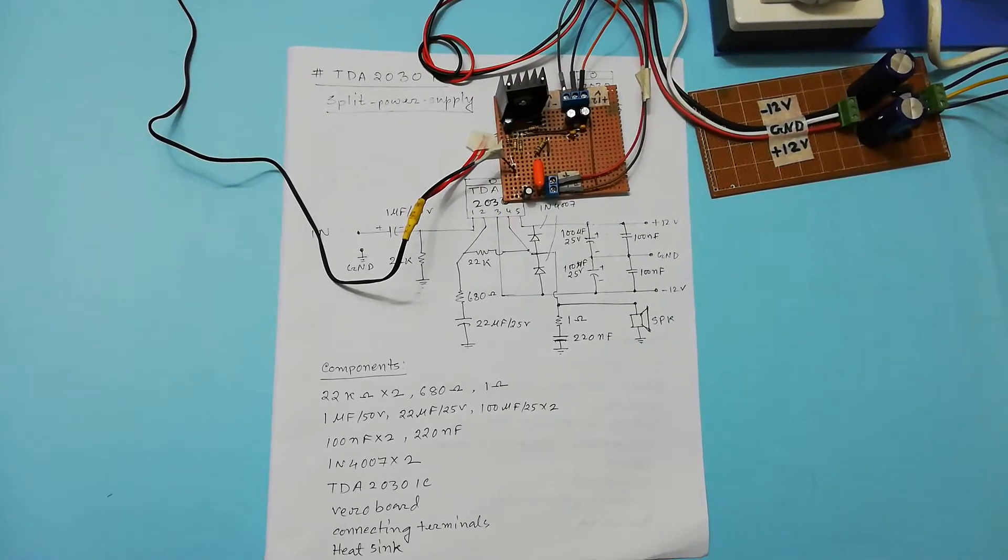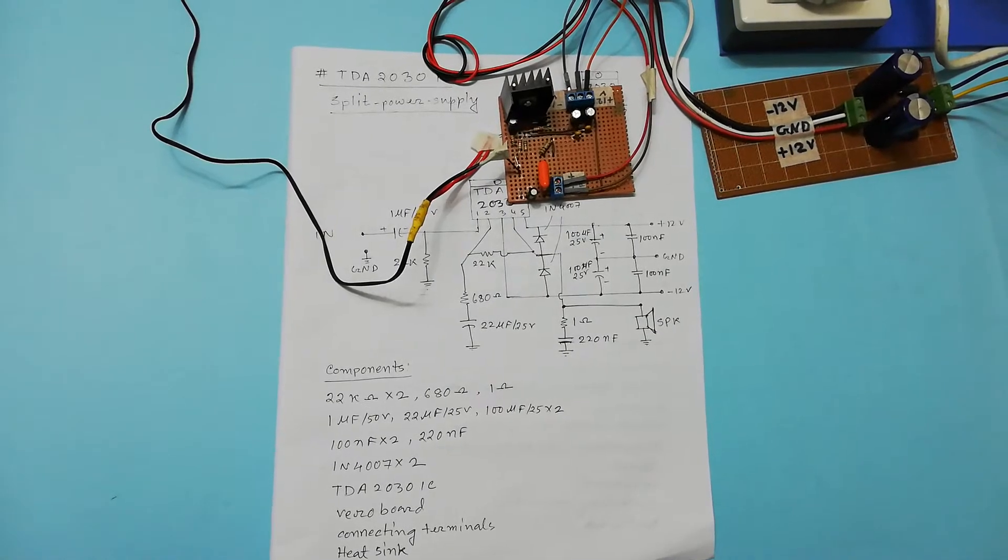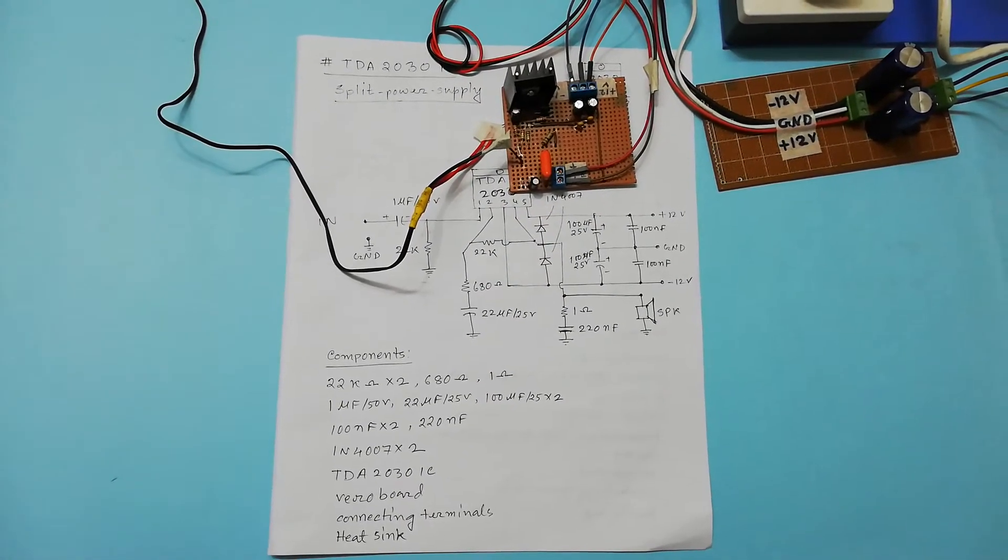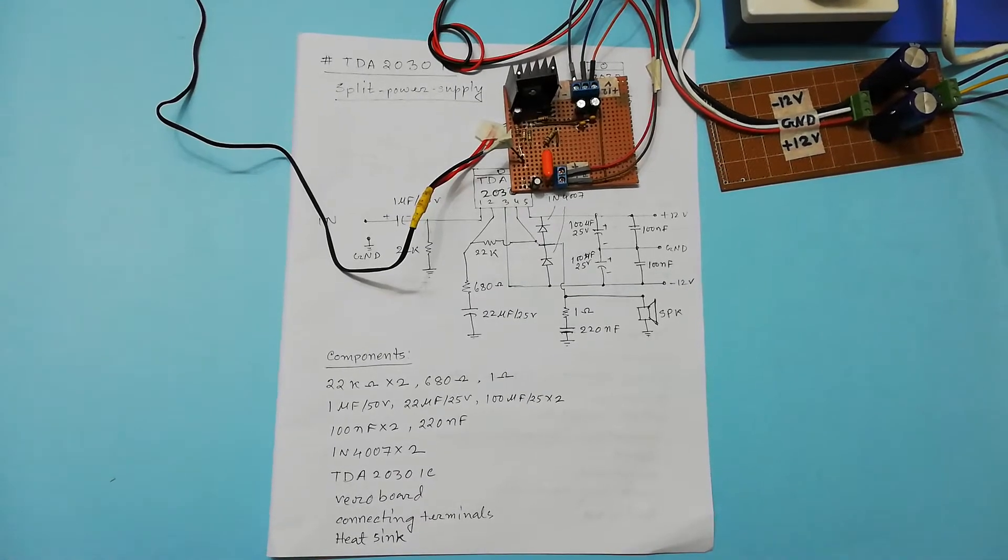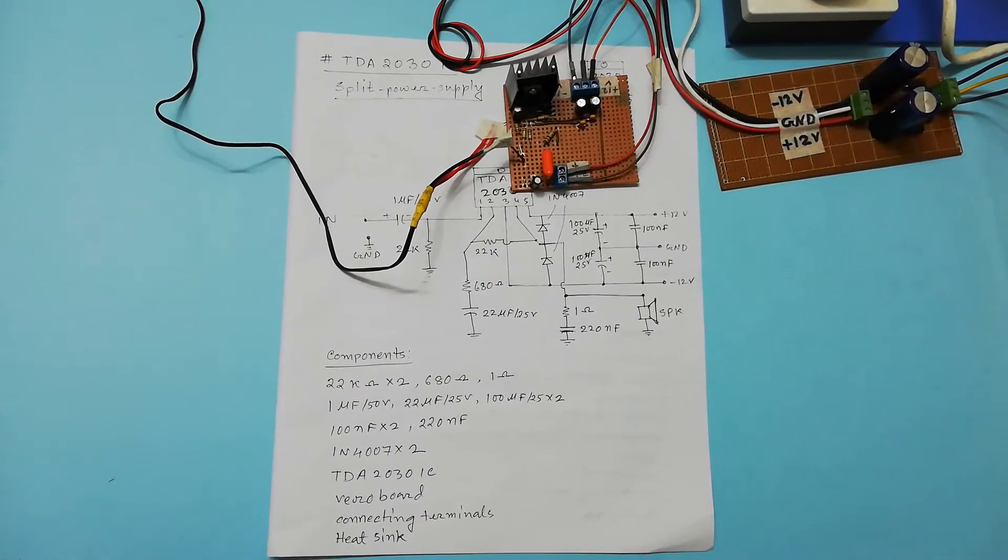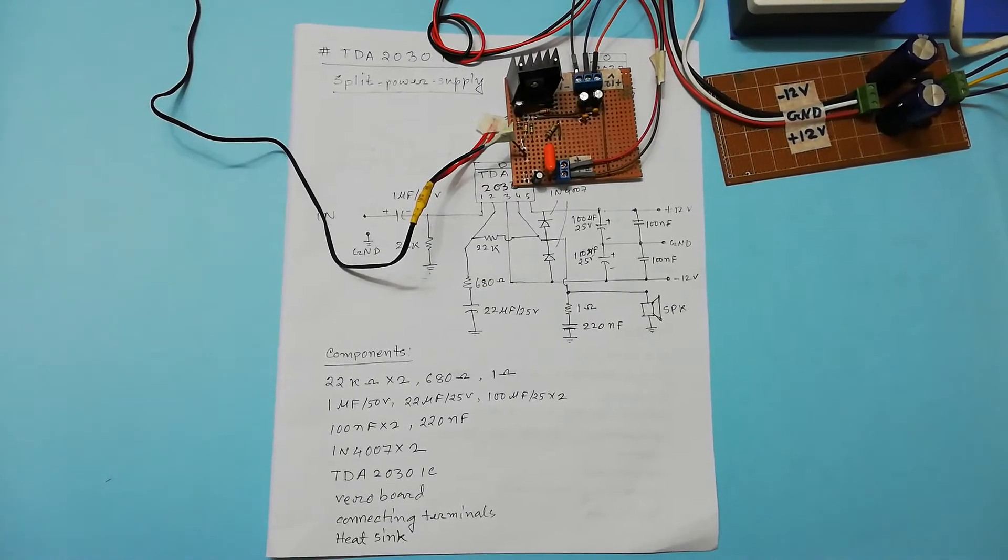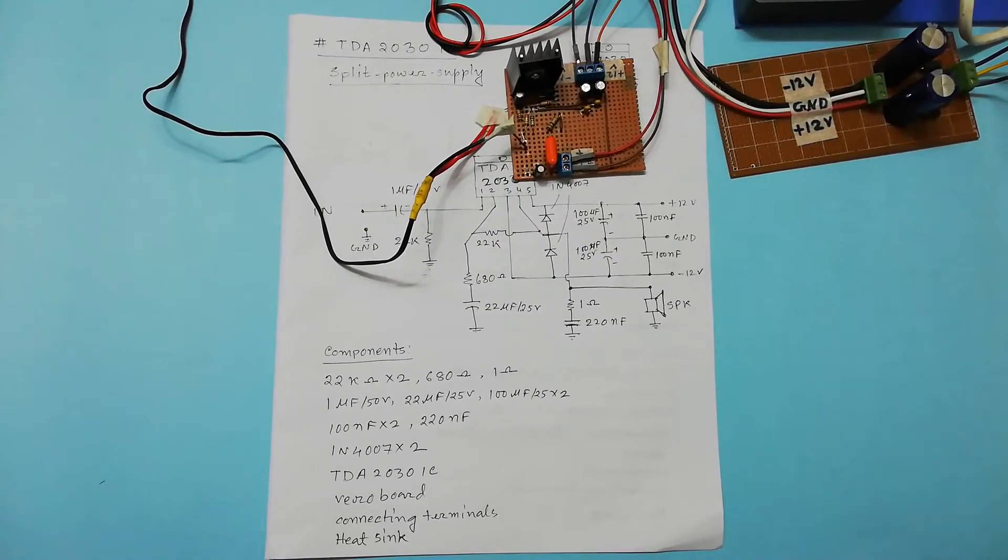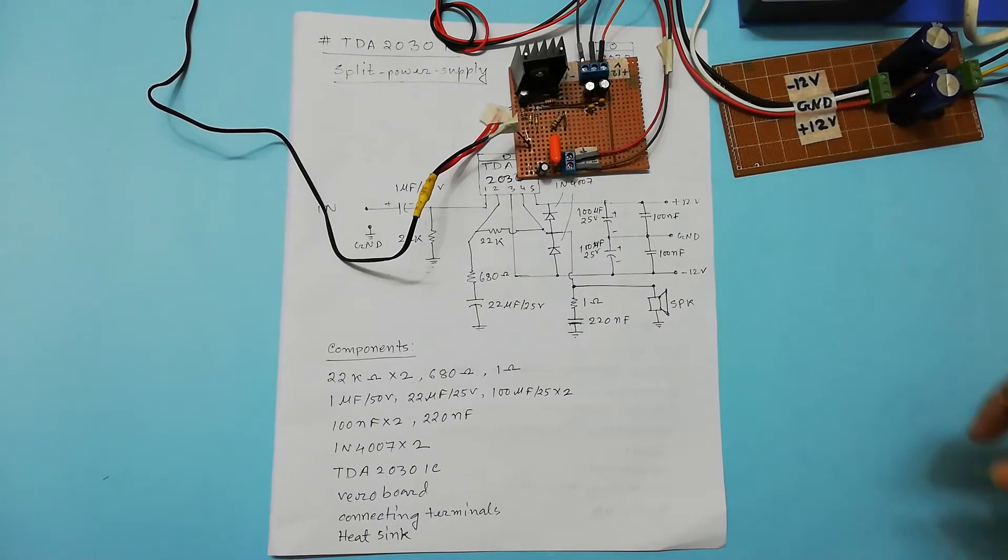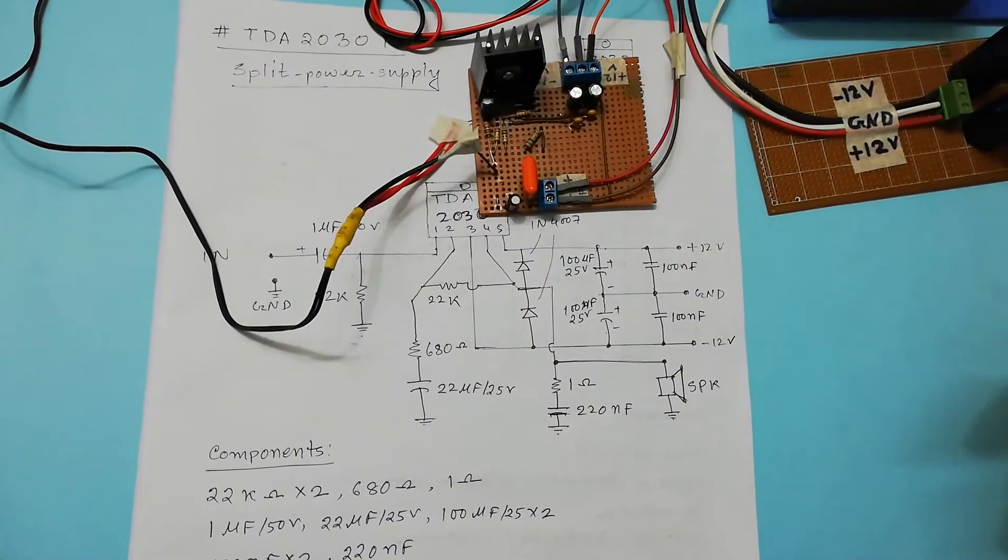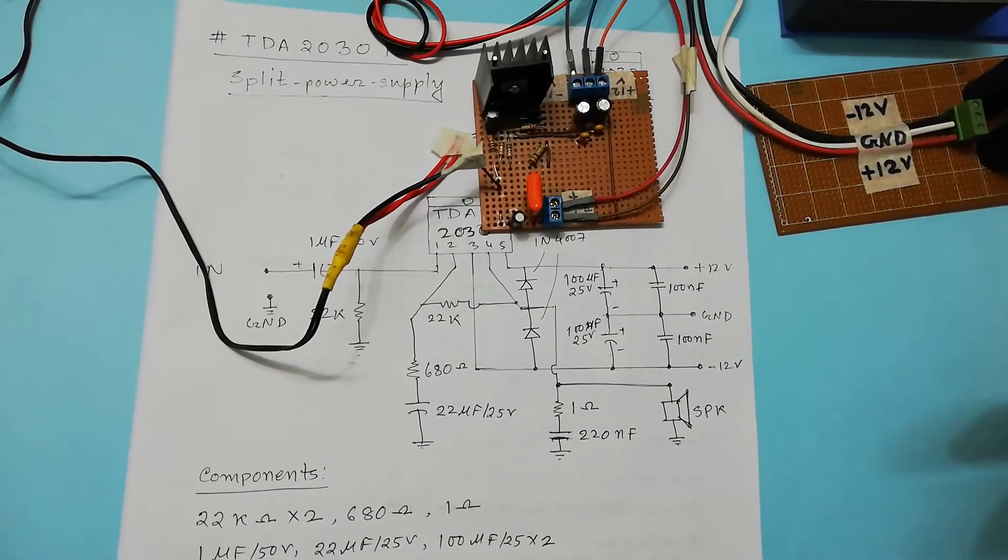In one of my previous videos, I showed the TDA2030 IC amplifier circuit in breadboard. But today I am going to show you how to construct it in VeroBoard. For stable performance and robust performance, you should have the circuit in a PCB printed circuit board or VeroBoard.